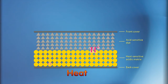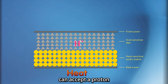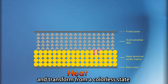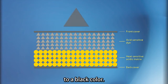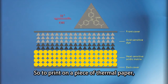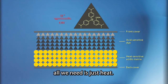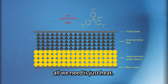In acidic conditions, chemical dyes such as crystal violet lactone can accept a proton and transform from a colorless state to the black color. So, to print out on a piece of thermal paper, all we need is just heat.